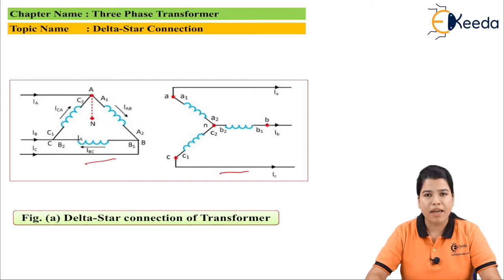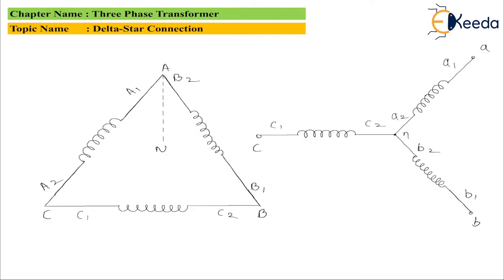If either the primary winding or secondary winding is phase shifted, then we get the value for the minus 30 degree phase shift. The diagram for the minus 30 degree phase shift shows that the secondary winding is phase shifted by 30 degrees as compared to the primary winding.